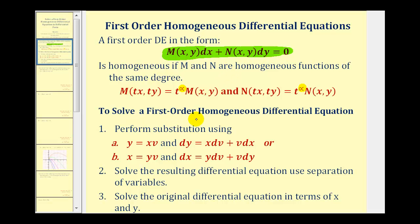Once we know it's homogeneous, we can solve the differential equation by performing a substitution, and we have two choices. We can let Y equal X times V, and therefore dY equals X dV plus V dX using implicit differentiation and the product rule. Or we could let X equal Y times V, and therefore dX equals Y dV plus V dY. To decide which substitution to use, it's based on whether function M or function N is simpler. If M is the simpler function, we perform a substitution for dX using X equals Y times V. If N is simpler, we substitute for dY using Y equals X times V.